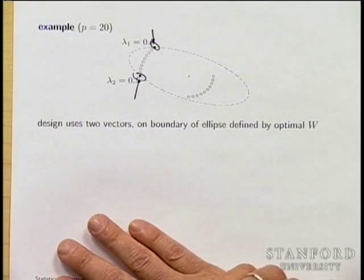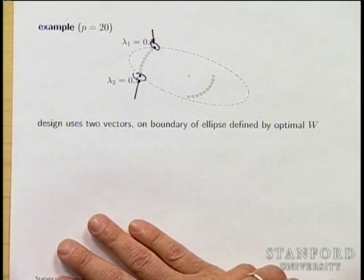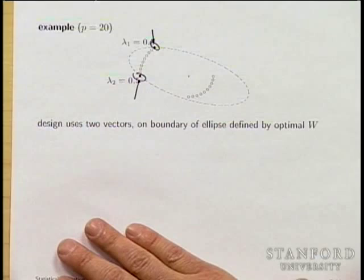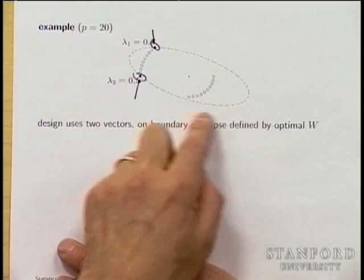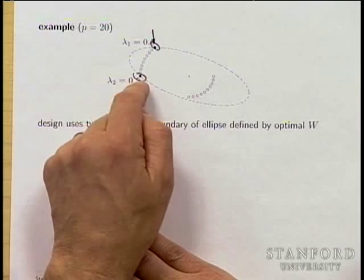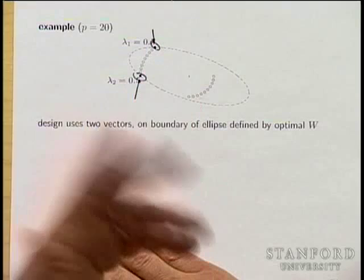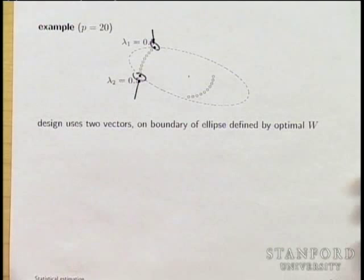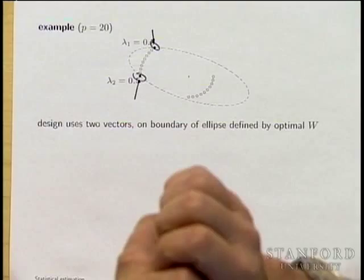The dual has a perfect interpretation: take these 20 points and compute the minimum volume ellipsoid that covers them, centered at zero. The ellipsoid touches exactly those two points — the ones chosen in the experiment design. This gives another way to understand experiment design: you're choosing points that are far from each other, but not simply the ones with highest signal-to-noise ratio, which would be a greedy scheme.